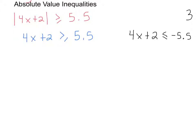And so now what I'm looking to do is solve each of these equations. So on this left one, I'm going to subtract 2 on both sides. And so I have 4x is greater than or equal to 3.5. And then I will divide 4 on both sides. So x is greater than or equal to what? 0.875.